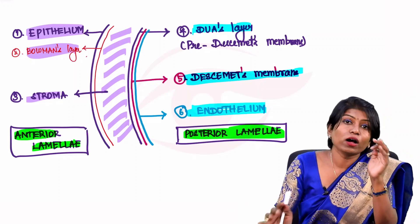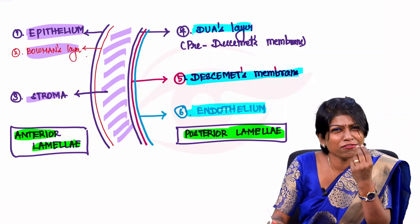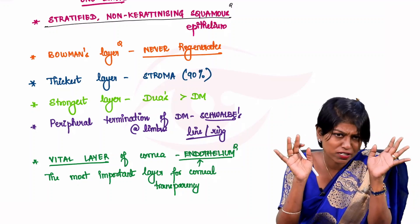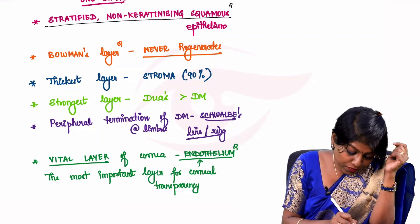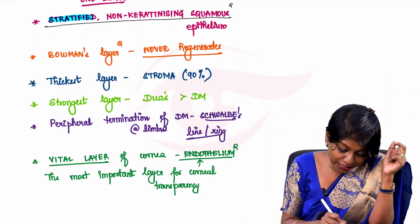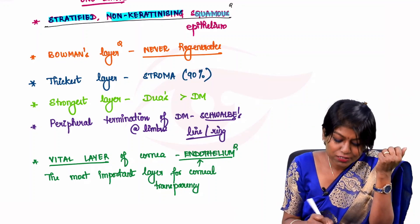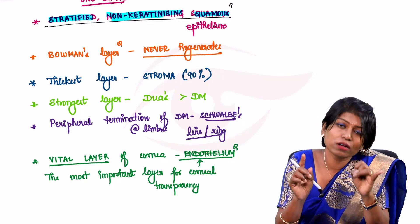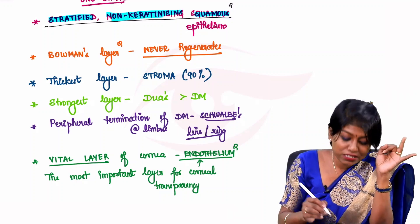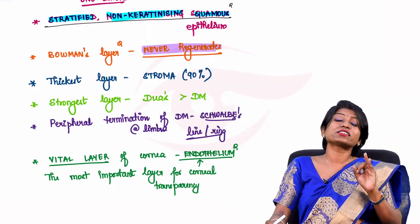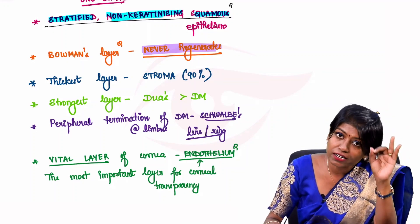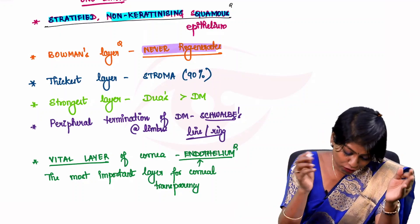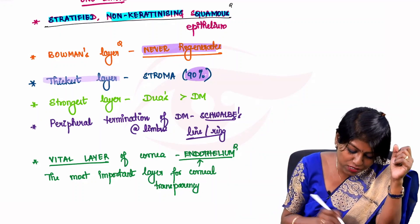Key one-liners for each layer: Epithelium is a stratified non-keratinizing squamous epithelium — non-keratinizing to maintain transparency. Bowman's layer is the only layer that never regenerates if damaged. Stroma is the thickest layer, comprising 90% of corneal thickness.